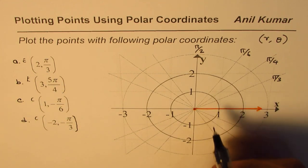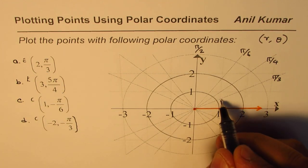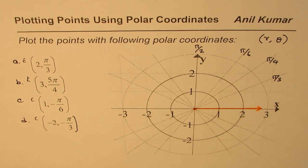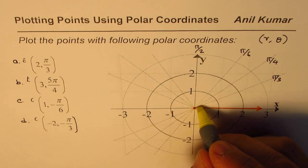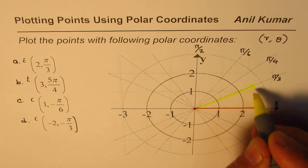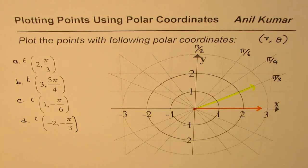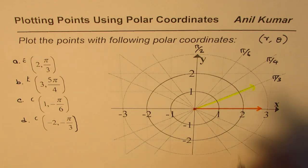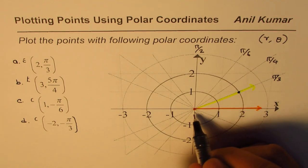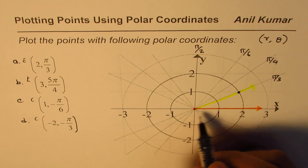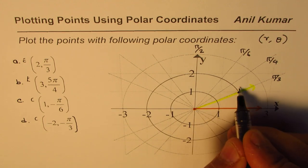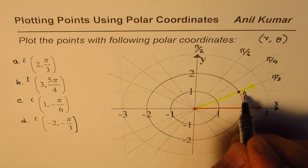Now first one is (2, π/3), so it makes an angle of π/3, so that means we are on this particular ray. Now on this particular ray, r is 2, therefore the point should be here. So that is the distance from the pole. So that is the point and we'll call this point as A. This point is (2, π/3) for us.